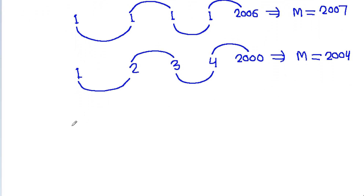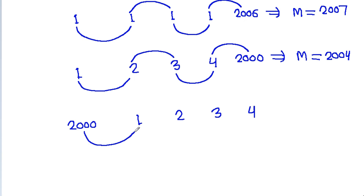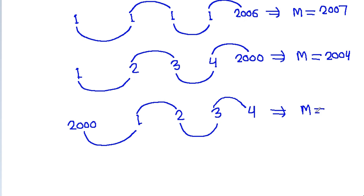And we have to find the smallest value of m. Suppose a is 2000, b is 1, c is 2, d is 3, and e is 4. Then a plus b is 2001, b plus c is 3, c plus d is 5, d plus e is 7. So m will be equal to 2001.